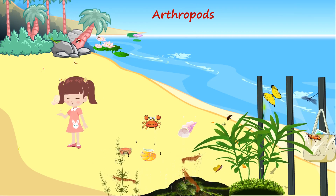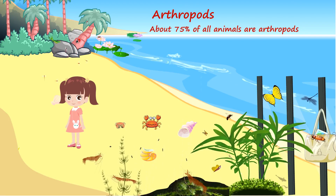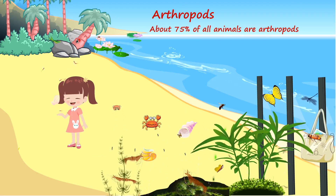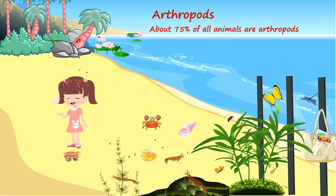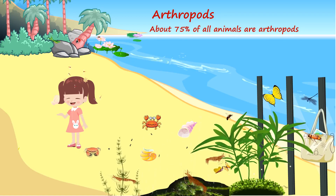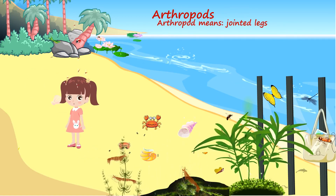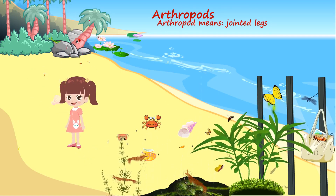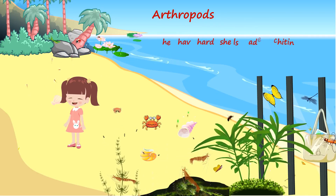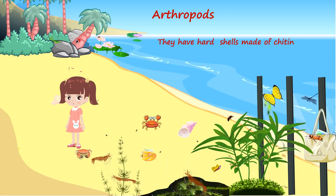Arthropods. About 75% of all animals are arthropods. Arthropods means jointed legs. They have hard shells made out of chitin.